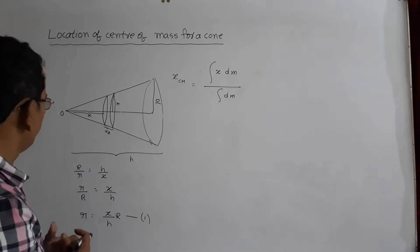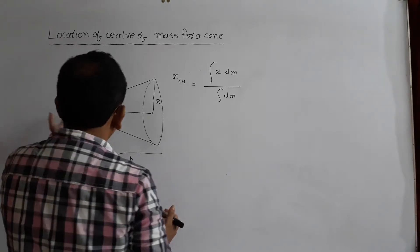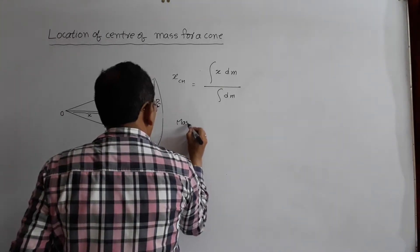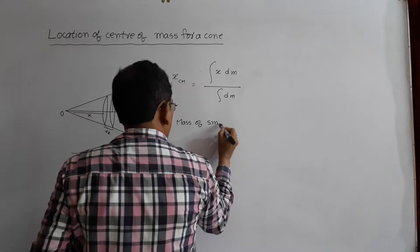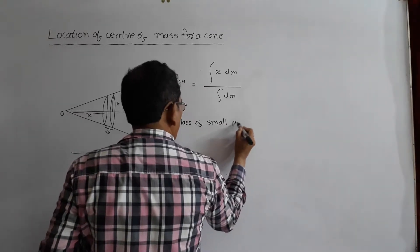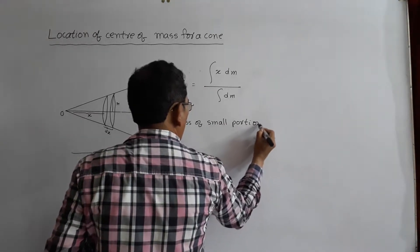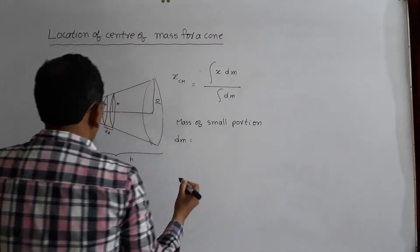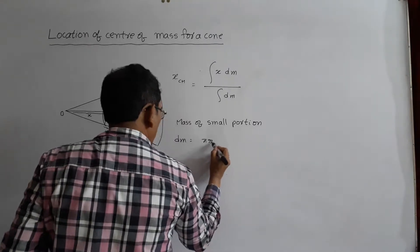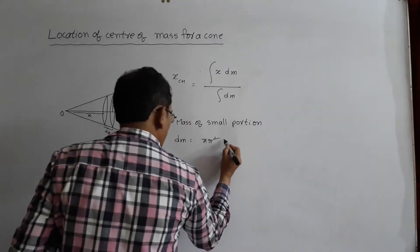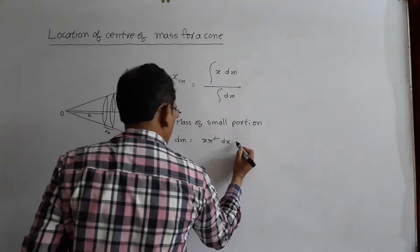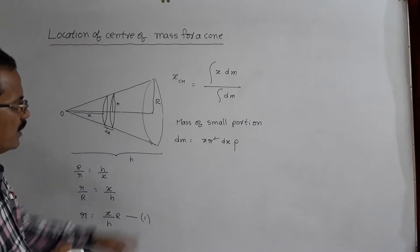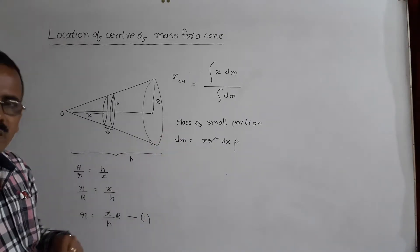What is the mass of this small portion? The mass dm is equal to its area — that is π·r² — times the thickness dx, times the density ρ. That is the mass of this small portion.